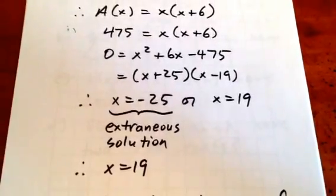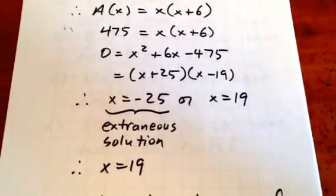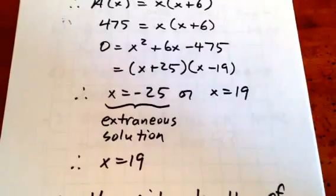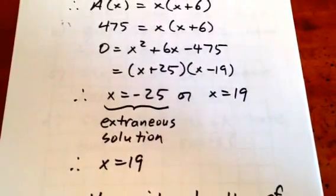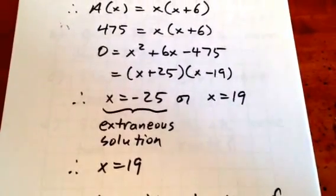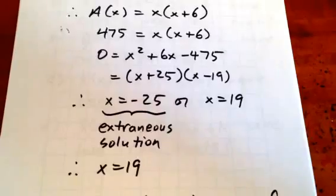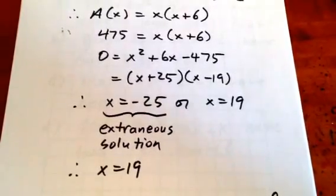That means that x is negative 25 or x is 19. Well, remember x is the length of one of the sides, so to say that x is negative 25 is an extraneous solution. That means x must be 19.